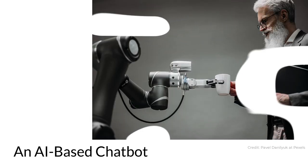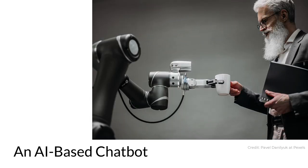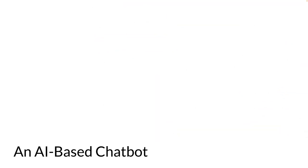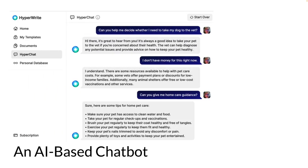AI-powered chatbots are far more sophisticated. They use natural language processing, or NLP, to determine the intent behind a user's question or prompt. Instead of relying on keywords or buttons with predetermined options, users put in prompts just like they would if they were talking to a human agent, and the bot can often understand the context and give an appropriate response. Let's look at that example about my dog again.